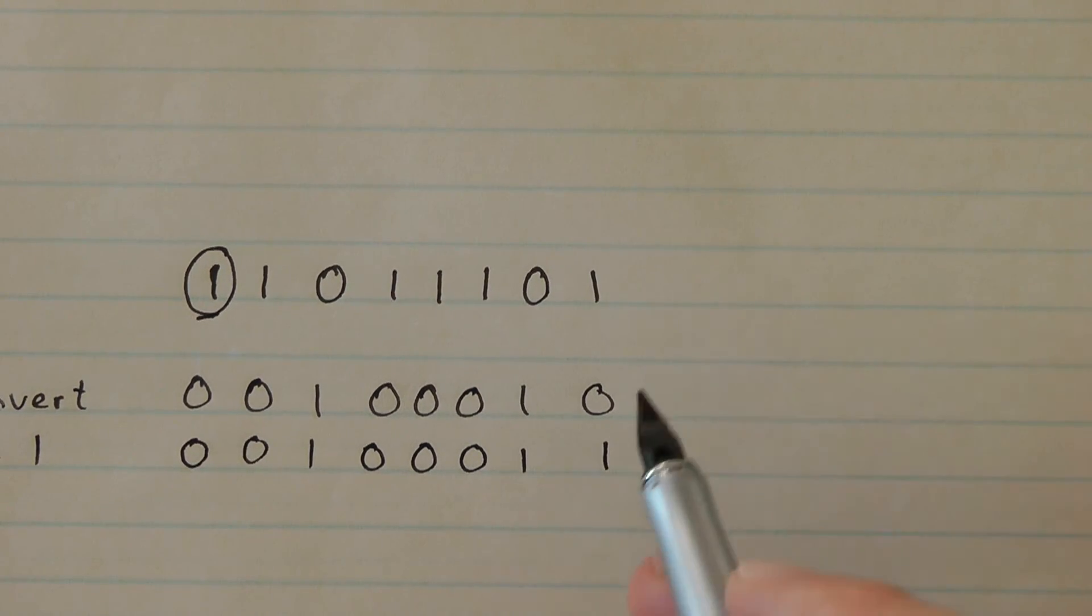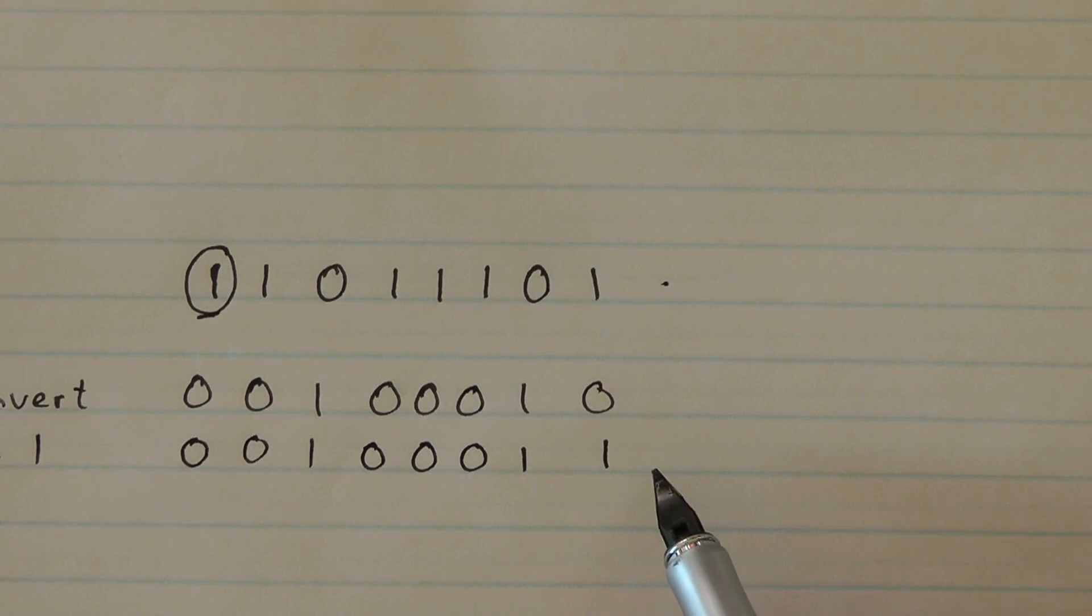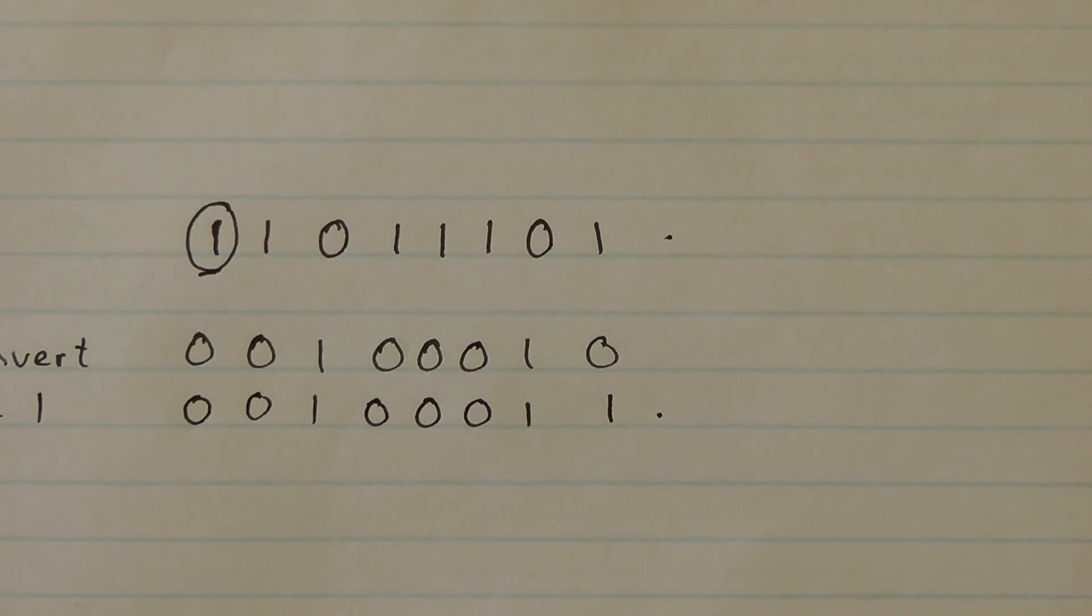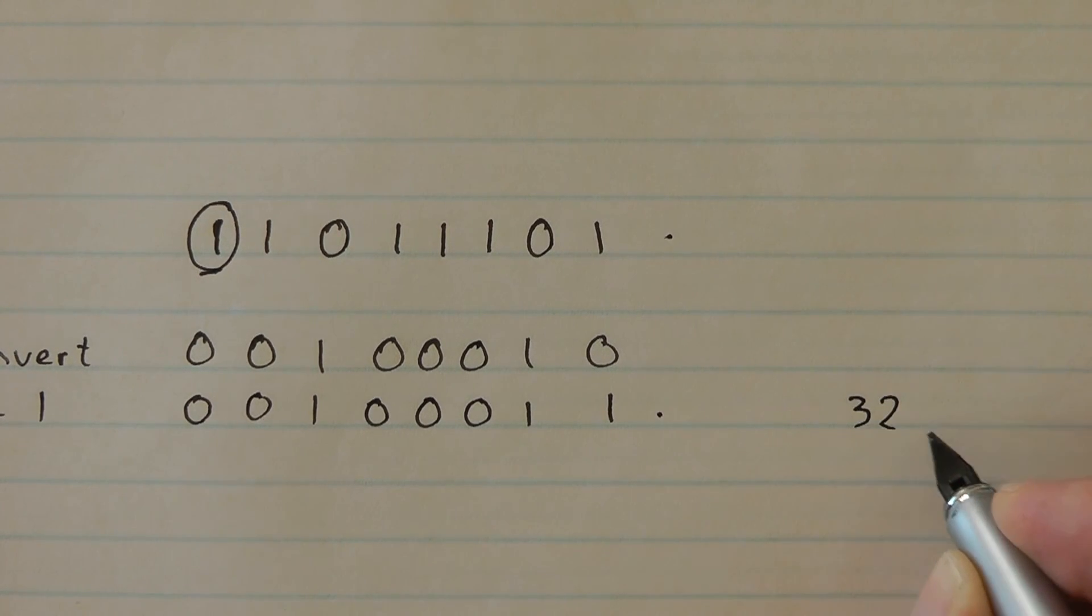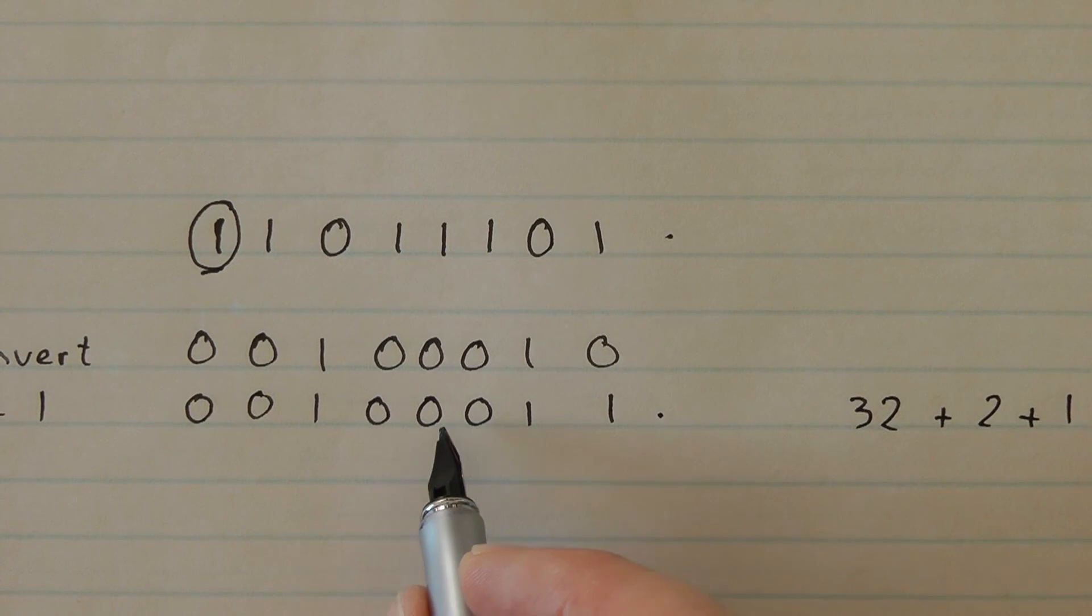Now this was minus 35 up here. I've done its two's complement. So this binary value here should be 35, which should be made of a 32 plus a 2 plus a 1. So I've got my 1, I've got my 2, 4, 8, 16. There's my 32. So it's working.